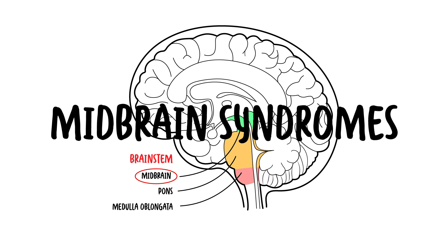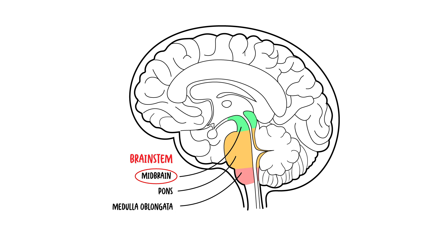Hello, in this video we're going to talk about and learn about midbrain syndromes. This is a second part video to the midbrain anatomy video. In order to talk about midbrain syndromes, we first need to revise the rules of four for the brainstem, which is a simplified method used to understand brainstem anatomy and brainstem vascular syndromes.